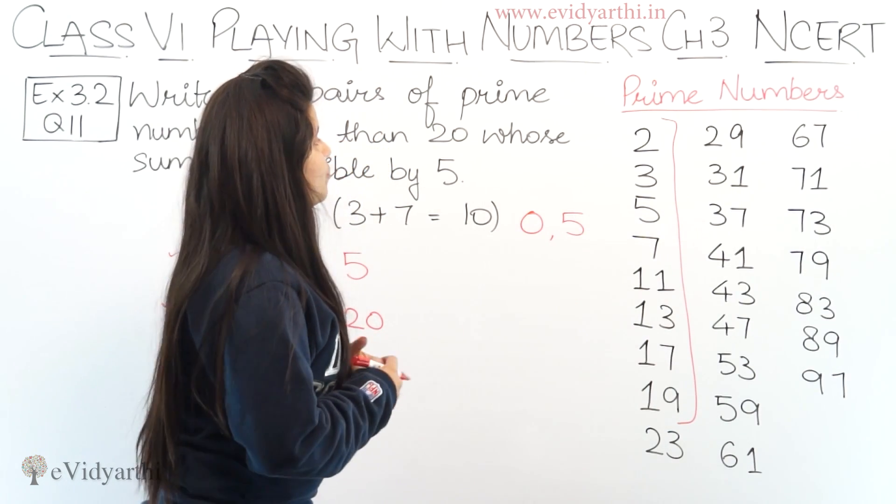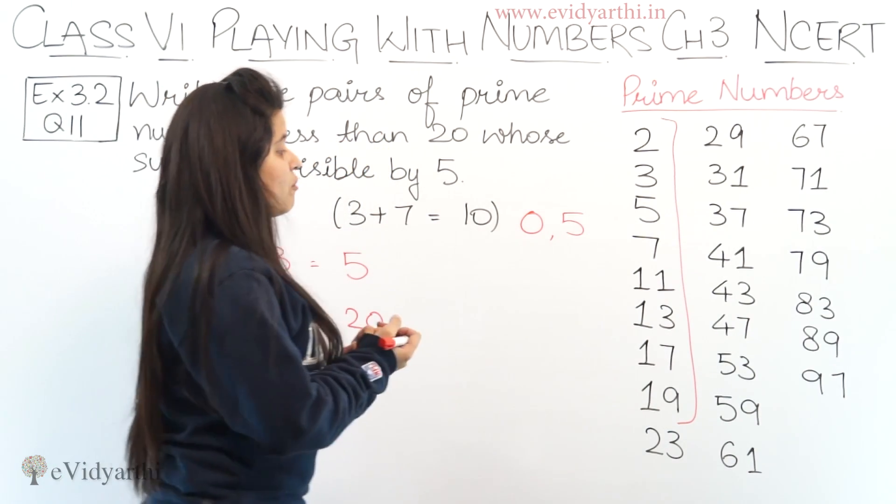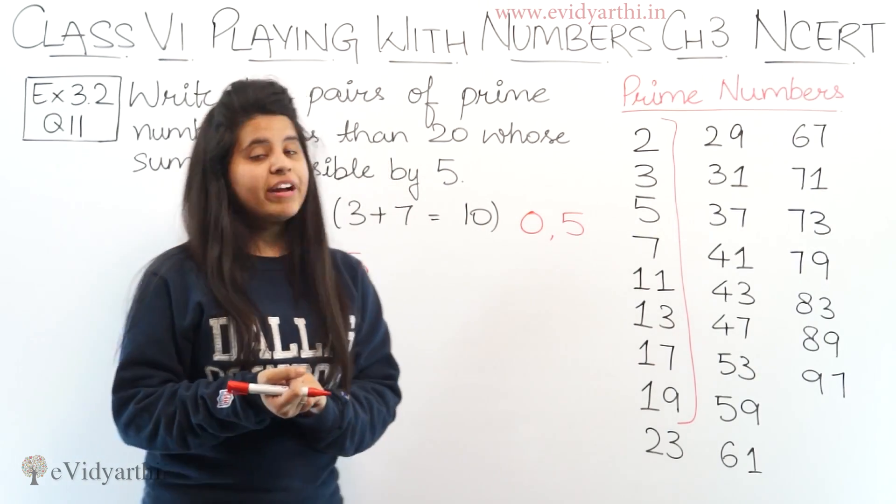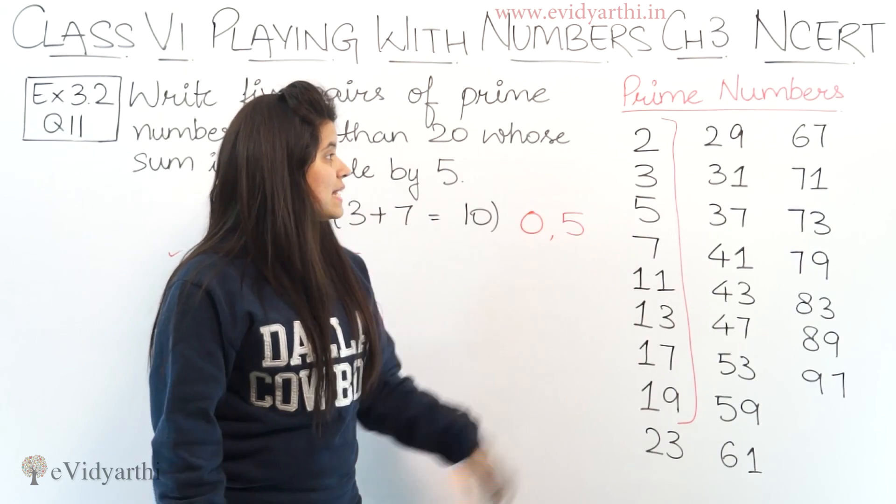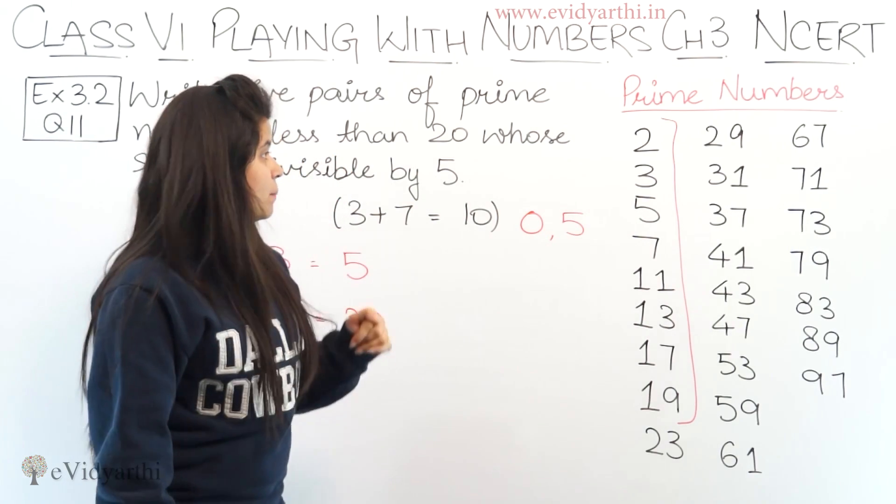After that we have 5. So what pair can be made with 5? Now if I add 5 with 5, 5 plus 5 will be 10, last digit will be 0. After this, no other number can go with 5.